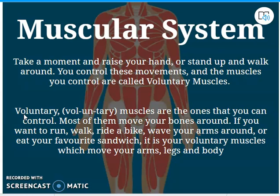Voluntary muscles are the ones that you can control. Most of them move your bones around. If you want to run, walk, ride a bike, wave your arms around, or eat your favorite foods, it's voluntary - you choose to do this. You are moving those parts on purpose. So there are voluntary muscles in your muscular system, and I think that's very important to jot down. I would take some time on this slide, pause it if you have to, and go back into the Nearpod. Understanding voluntary muscles is key to understanding the difference from the next set of muscles we will talk about.